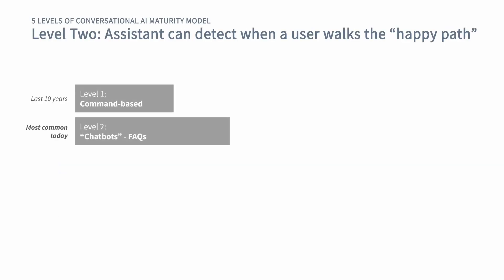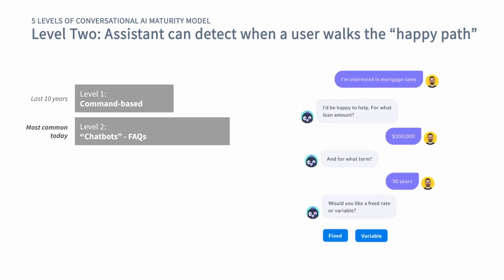At level two, there's less pressure on the end user, because the assistant can pick up on intents. But these intents will still be just that — it'll be very much like a frequently asked questions page. There's no context that moves the conversation forward, but the user won't need to remember all of the possible inputs. These conversations lack context and tend to fail once a user starts to deviate from the happy path.